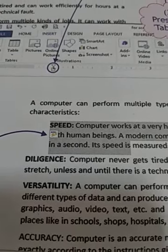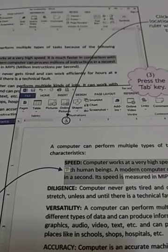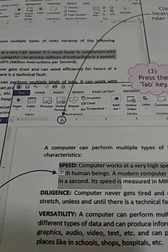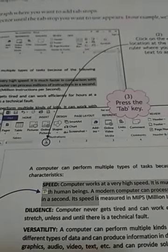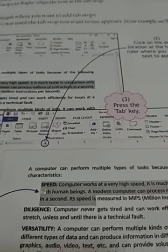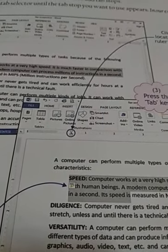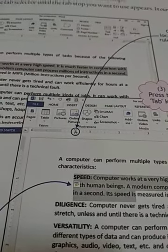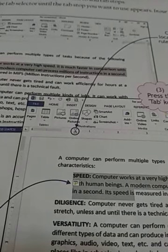Before that, I'll explain the function of the normal tab key. The normal tab key moves the cursor half an inch towards the right from the insertion point where your cursor is blinking. If we are not particular about half an inch and want to move less or more, then we use the tab stop key.